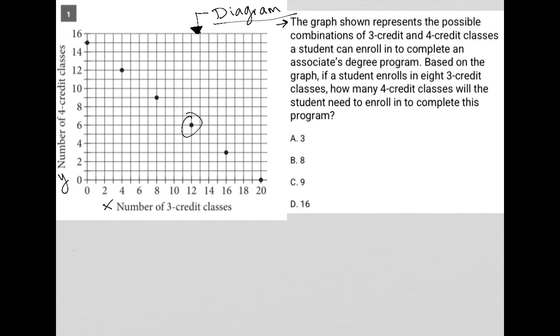I'm going to circle this dot right here and then interpret it based upon what I just read. This would mean that a student is taking 12 three-credit classes and also taking six four-credit classes. That would be the combination of three-credit and four-credit classes.